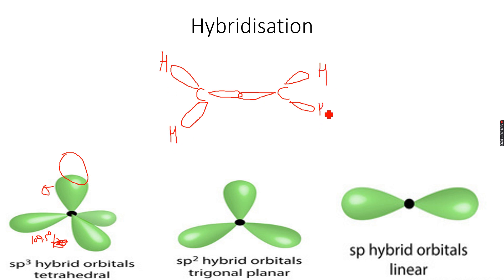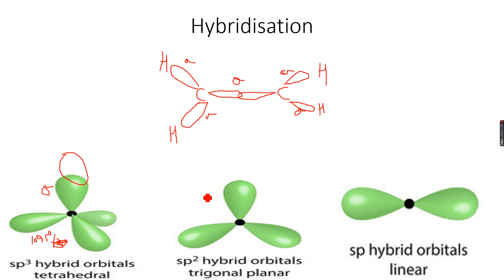So we have sigma, sigma, sigma, sigma, sigma, and sigma — we have five sigma bonds over here.